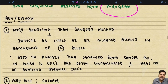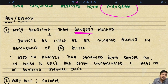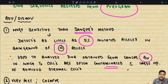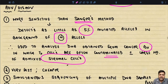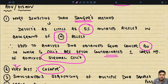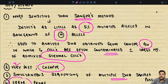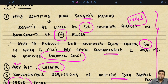Advantages of pyrosequencing: it is more sensitive than Sanger's method and can detect as little as 5% mutated alleles in a background of normal alleles. Therefore it is used to analyze DNA from cancer biopsies where tumor cells are contaminated with large numbers of admixed stromal cells. It is also faster and cheaper than Sanger sequencing, and simultaneous sequencing of multiple DNA samples is possible. One disadvantage: it is more error-prone than Sanger's method.